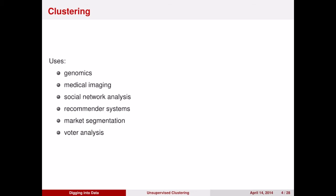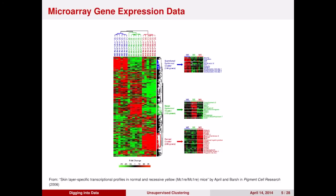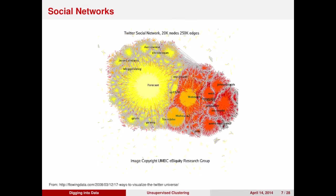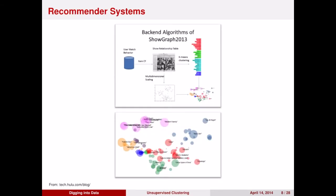Clustering is really useful in a lot of different domains. It's used in biological methods to figure out what genes are similar to each other that perhaps have similar functions in the body. It's used to look at brain scans of individuals to determine whether activity patterns in a brain are normal or not. It's also used in social networks to discover communities of people talking about the same things. It's also used on services like Amazon and Netflix to cluster types of products so that they're similar and thus can be recommended — if you like one thing in this cluster, you may like another thing in this cluster because they have similar properties.